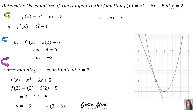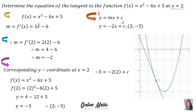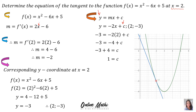Step 4: find the equation of the tangent y = mx + c. We know m = -2, so we have y = -2x + c. To find c, we use the point (2, -3): substitute y = -3 and x = 2, giving -3 = -4 + c. Solving, c = 1. Therefore the equation of the tangent to this function is y = -2x + 1.